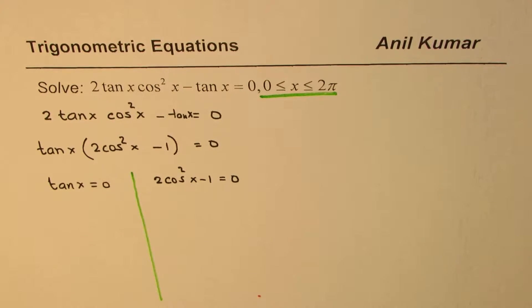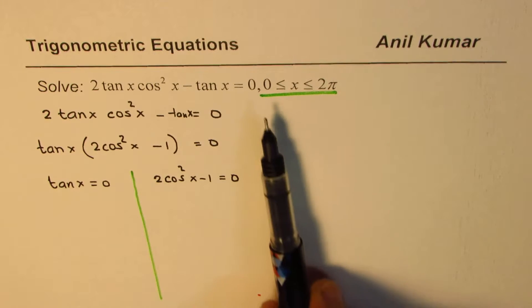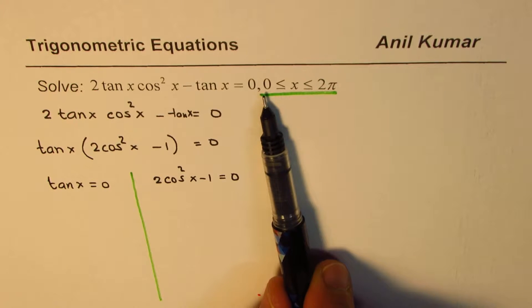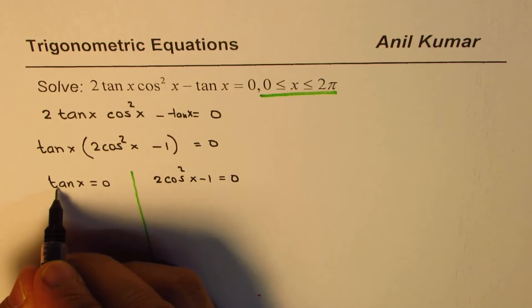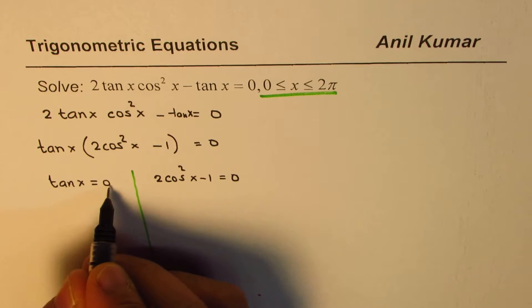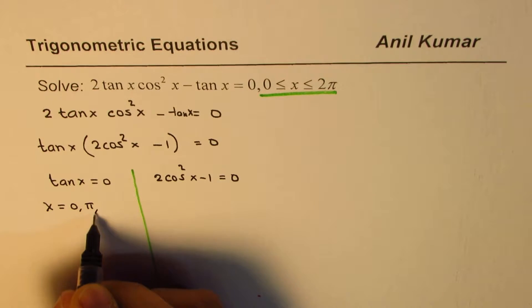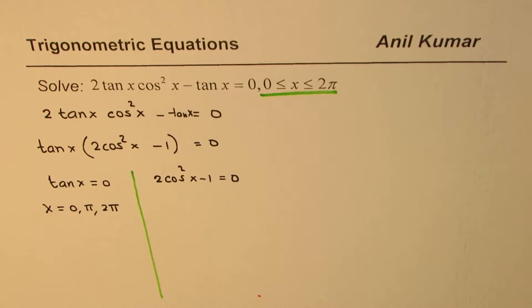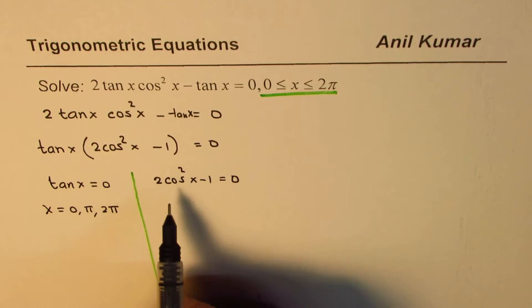Let's figure this out. When is tan x equal to 0? Tan x equals 0 when sin is 0. Within 0 to 2π, sin will be 0 at 0, π, and 2π. So tan x equals 0 gives you x equals 0, π, and 2π.